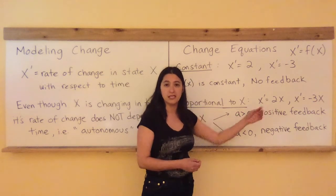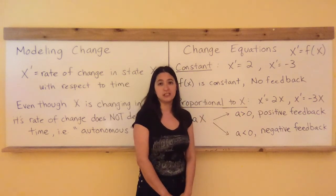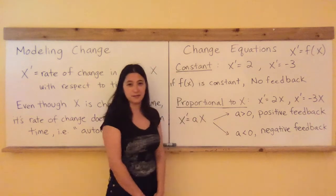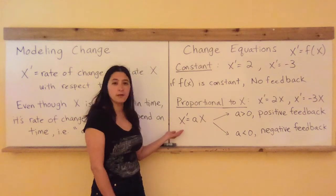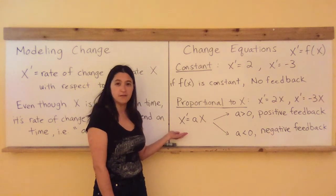This is our first instance of feedback, and what it leads to is exponential growth or decay. The general form of this type of equation, where f of X is proportional to X itself, is going to be X prime equals aX.